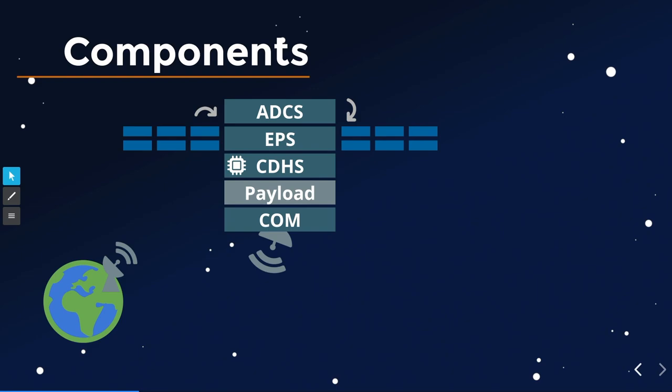The bus system consists of many components: an Attitude Determination and Control System (ADCS) which rotates the satellite; an Electrical Power Supply (battery and solar panels); a Command and Data Handling System (CDHS) — a microprocessor running the firmware we'll be looking at; and a communication system in the VHF, UHF, or S-band frequency range. If you want to take over the satellite, you have to gain control of the CDHS.